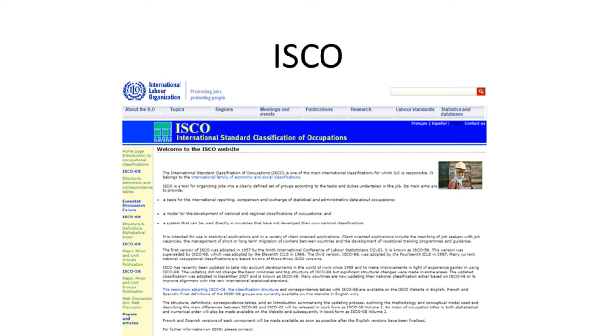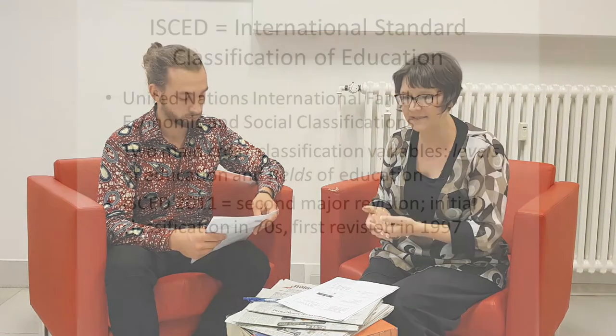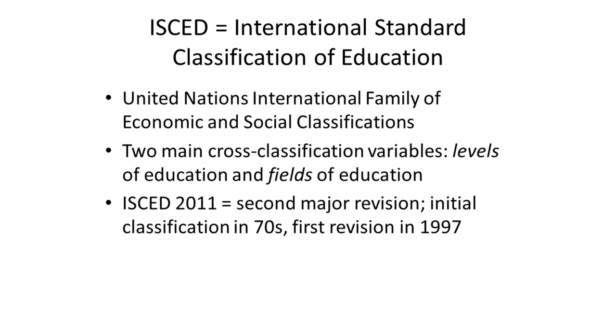That was a really helpful explanation. We should do one more example to reinforce this idea of the way that digits build up a code in these international standard classifications. So let's explain an example from ISCED, which is the International Standard Classification of Education. It was developed by UNESCO and the two cross-classification variables here are levels of education and field of education.